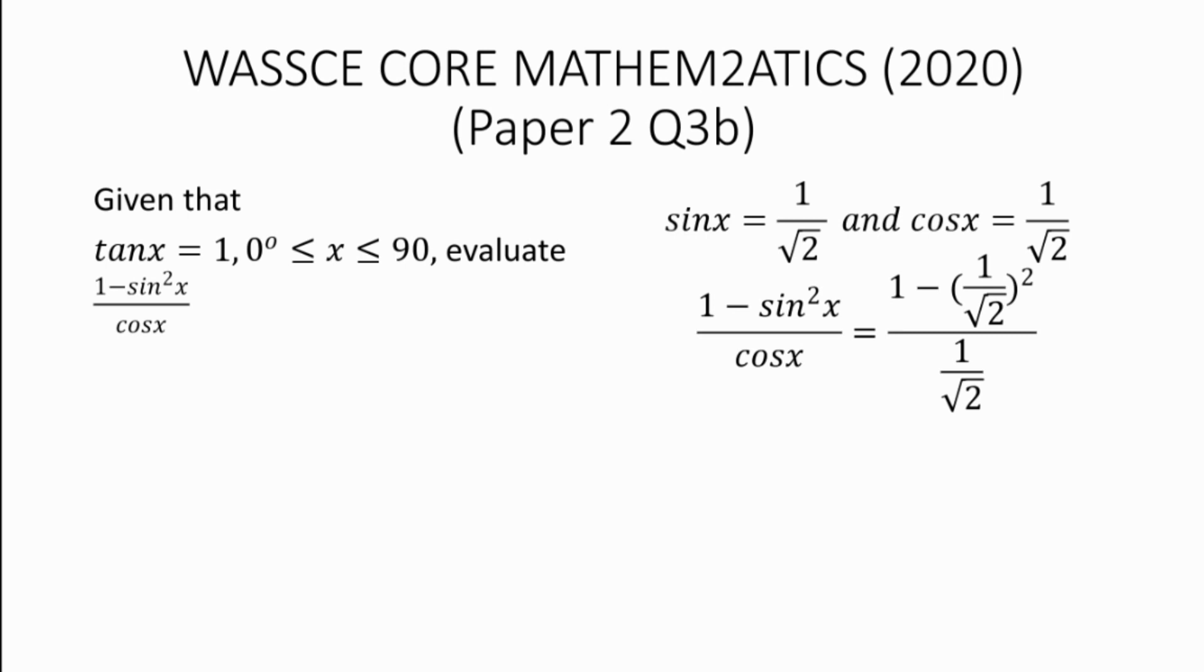And the question asks us to find 1 minus sin squared x all over cos x. So we have 1 minus sin x, which is 1 over root 2, squared, over cos x, which is 1 over root 2. And simplifying this, 1 squared gives us 1, and then root 2 squared gives us 2. 1 minus half gives us half over 1 over root 2. After simplifying this, we have root of 2 over 2, or 0.707.